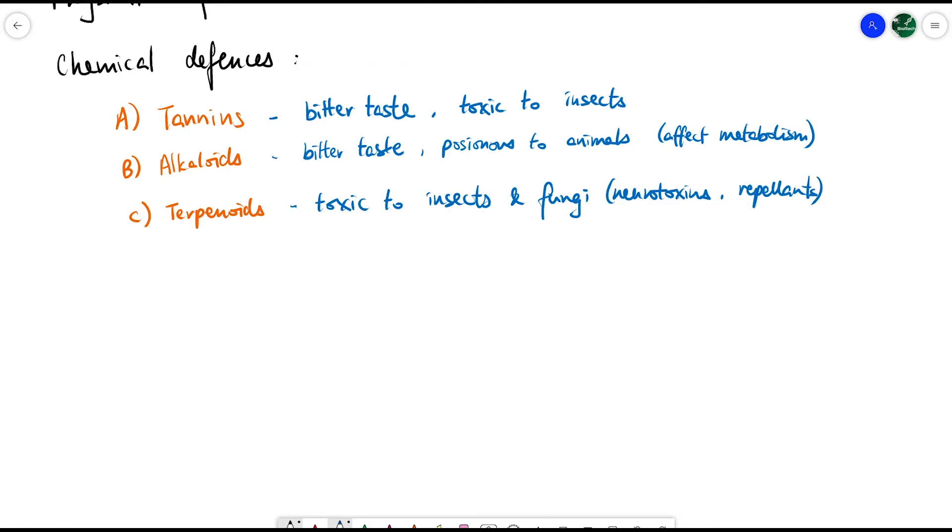The third type is terpenoids, which are toxic to insects and fungi and act as neurotoxins or repellents. Humans often realize there are uses for these naturally-made plant chemicals and use them to our own advantage.